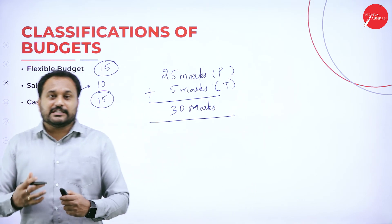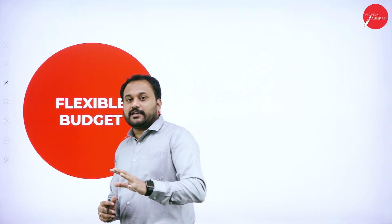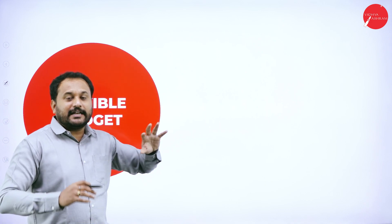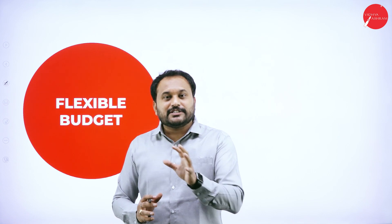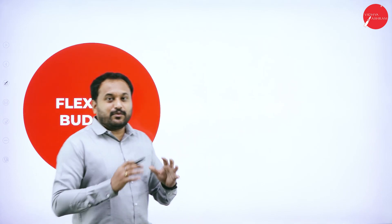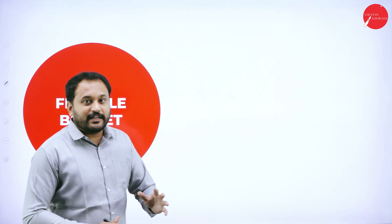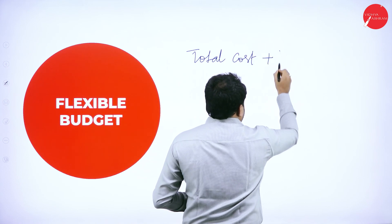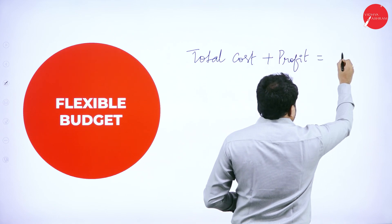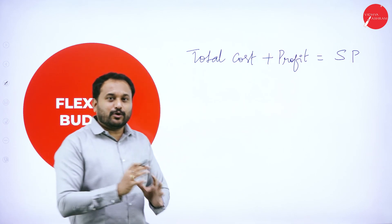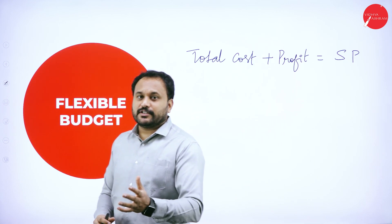Let's start with the first classification of budget — the flexible budget. There is a pro forma, but I'll tell you how to remember it using tricks so you can remember it properly. I want you to share this video so that each and every individual can actually score 15 on 15 in flexible budget. The formula is: Total Cost plus Profit equals Selling Price. We know this formula from the 6th standard — cost plus profit equals selling price.